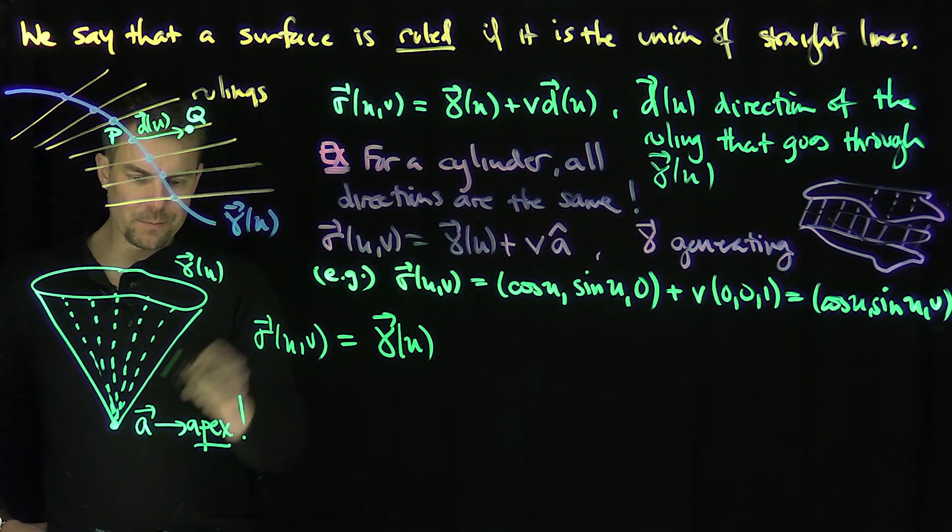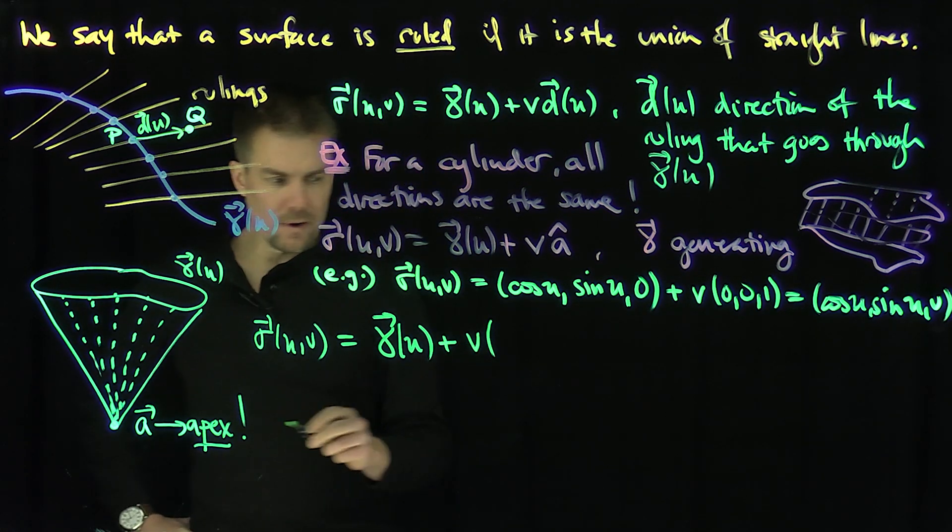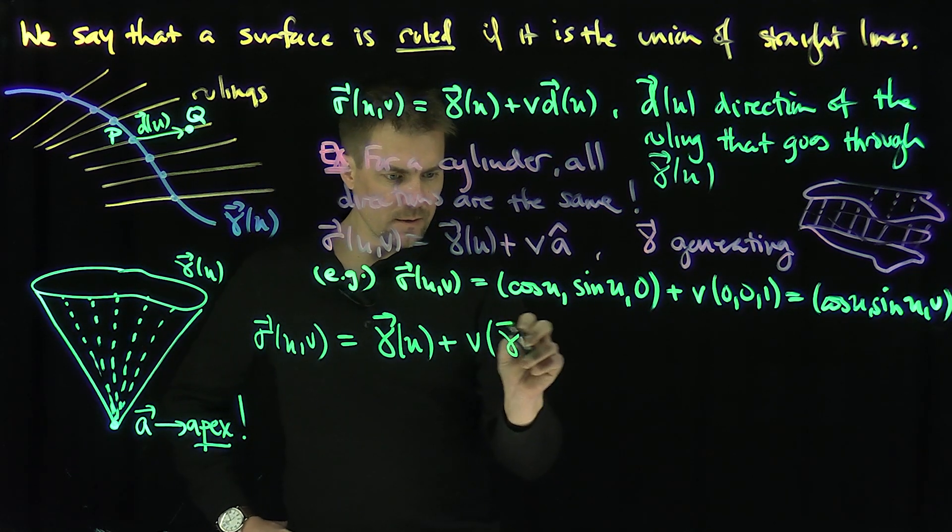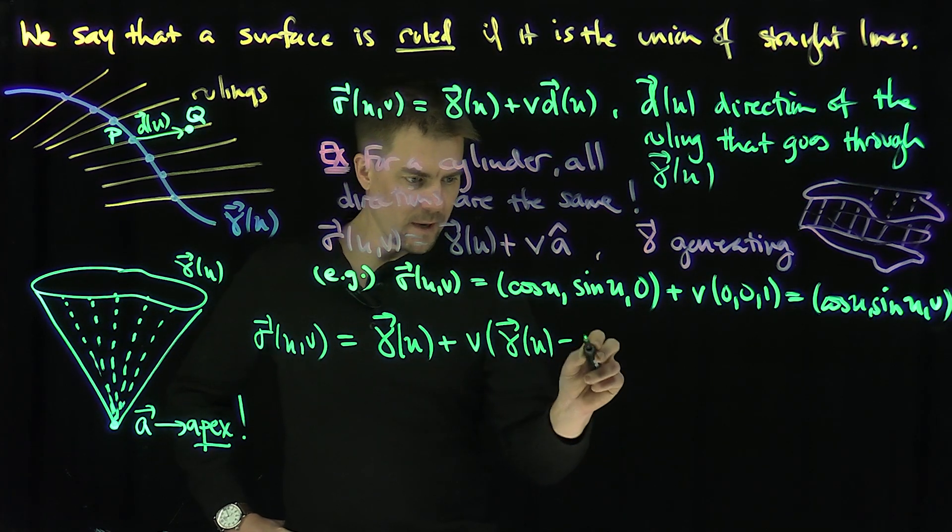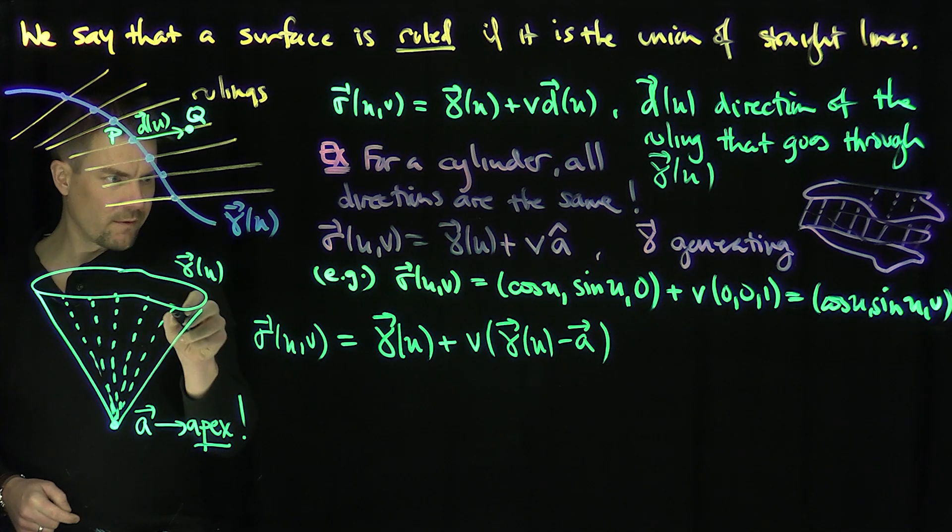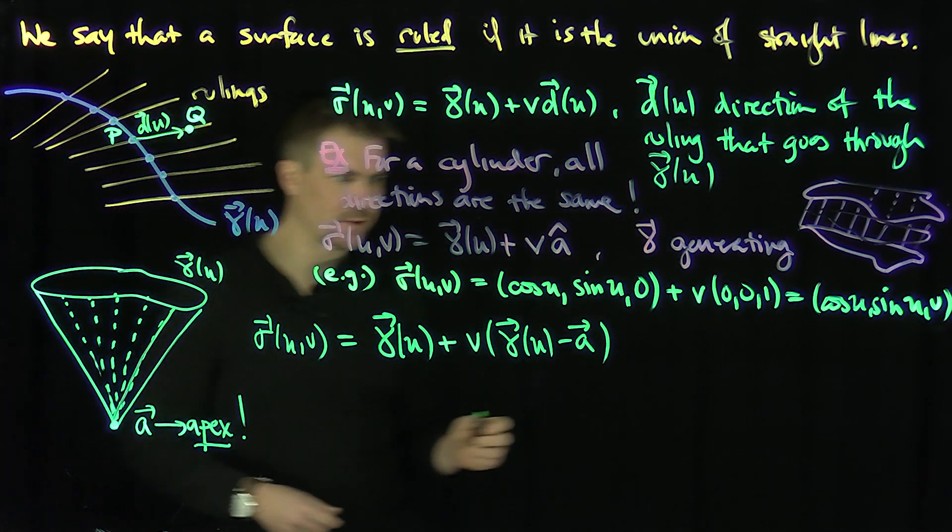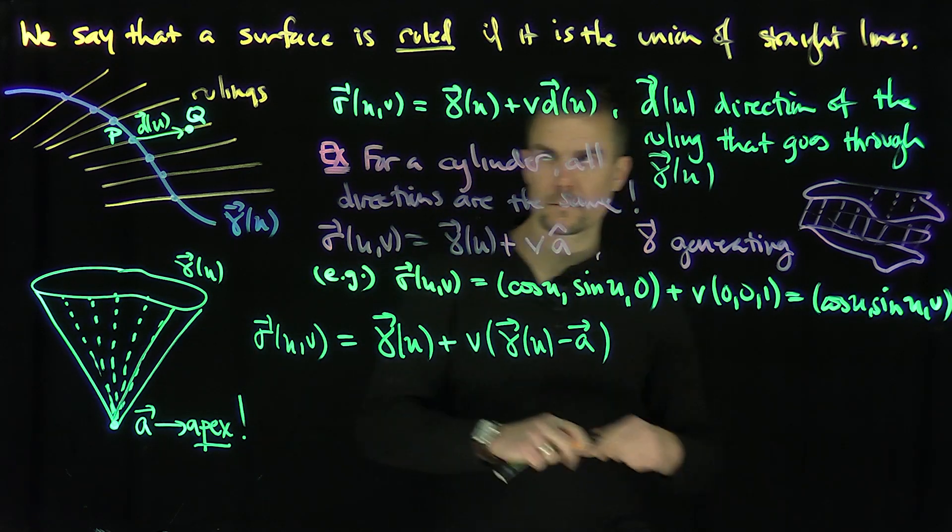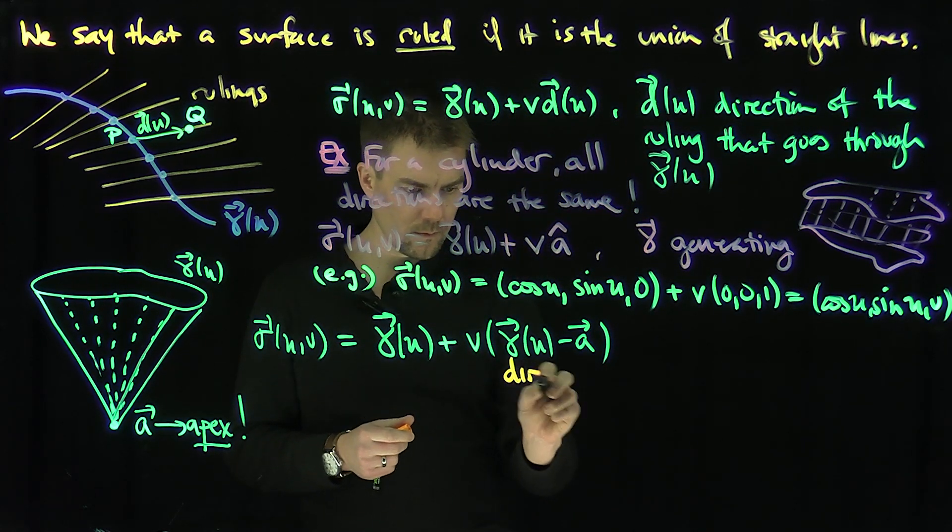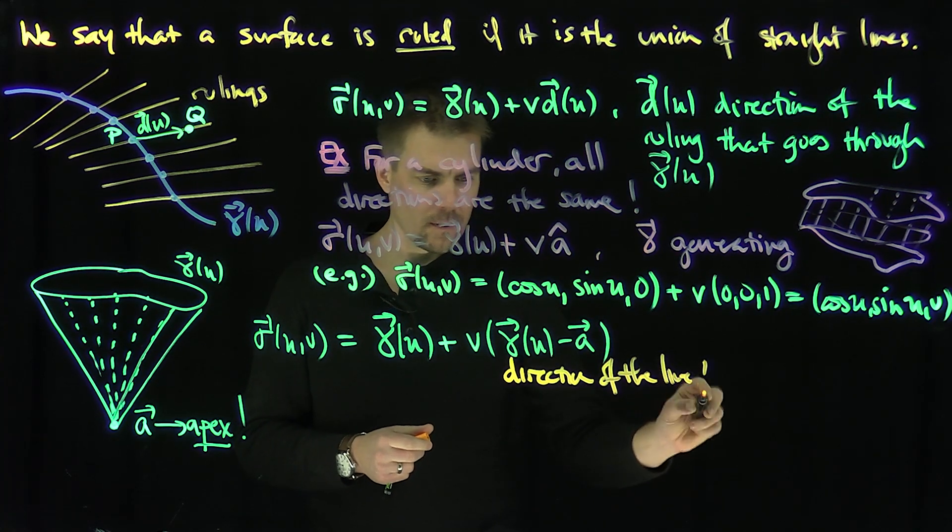And then I'm displacing it by what? I'm displacing it by this vector direction. That's going to be a plus v, and then gamma of u minus a. So gamma of u minus a. That's, of course, that direction. So the direction of these lines are what? I go from gamma of u to a. That's the direction of the line.